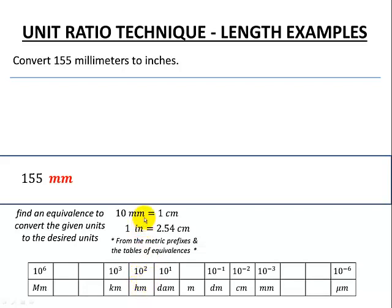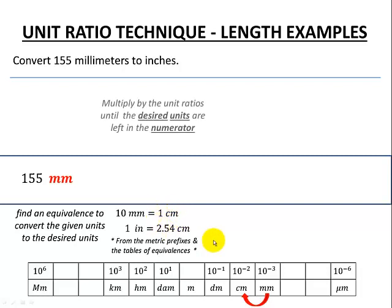Taking a look at where the 10 millimeters per centimeter came from — here's our abbreviated metric prefix table. We can see there is one jump between millimeters and centimeters, so there are 10 of the smaller things (millimeters) in one of the slightly bigger things (centimeters).